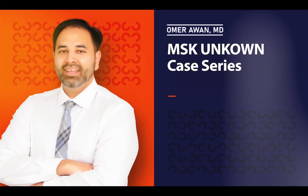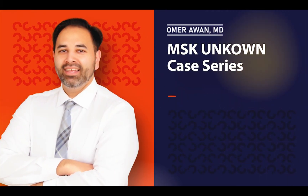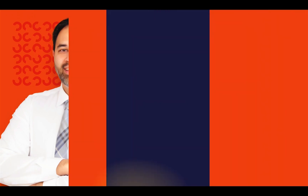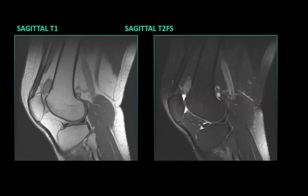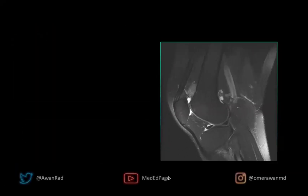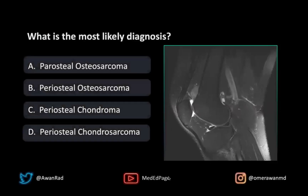Hello, everyone, and welcome back to the MedEd page. This is MSK case 93. I'm Dr. Omar Awan, a physician and public health contributor for Forbes.com. We have a great case — a sagittal T1 and a sagittal T2 fat-sat image through the knee showing some findings. The high-yield question here is: what's the most likely diagnosis?